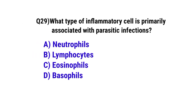Question number 29. What type of inflammatory cell is primarily associated with parasitic infection? The correct option is C. Eosinophils.